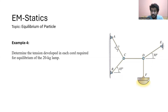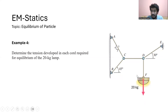We have a lamp F. This is point F, and this point F is connected with point D. The mass of the lamp is about 20 kg, and it is acting vertically downward.